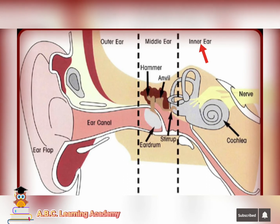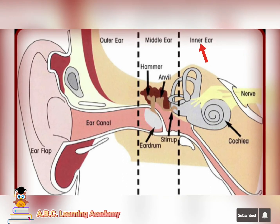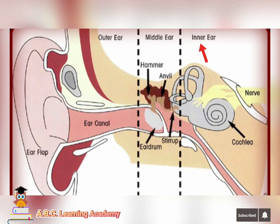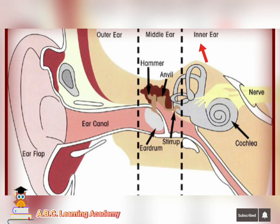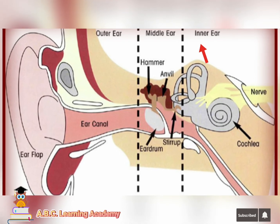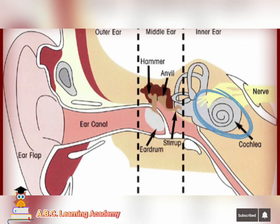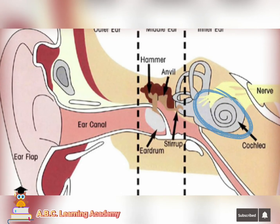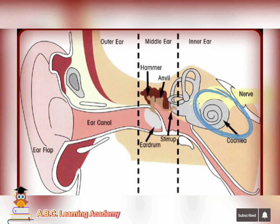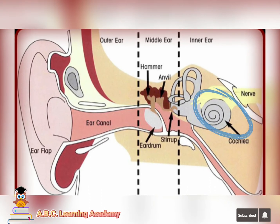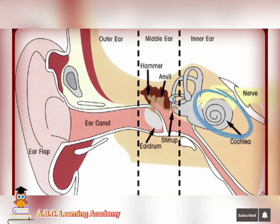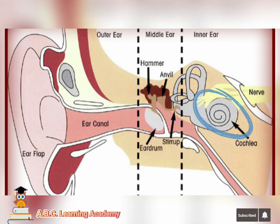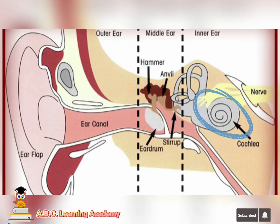Next is the inner ear. In the inner ear, you can find the cochlea. This cochlea transmits the sound waves to the brain. It has fluid in it.